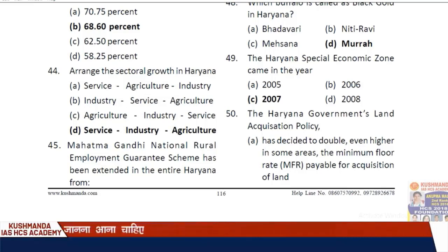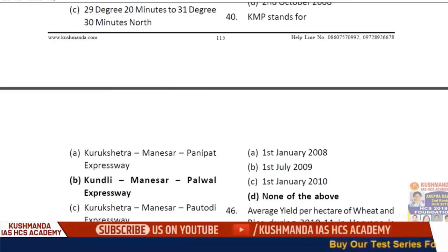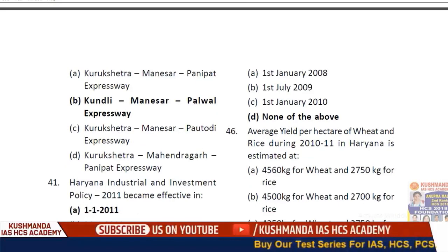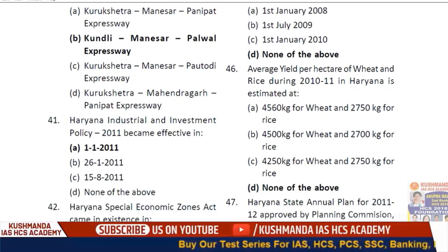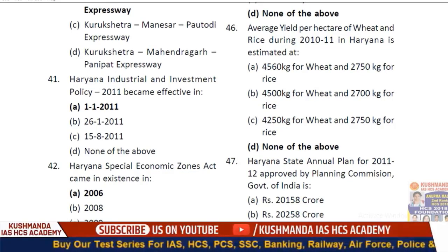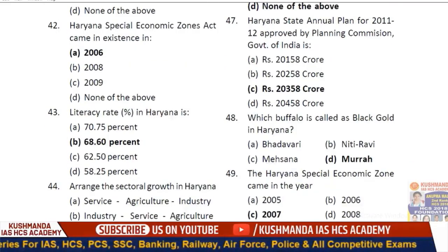Question 45 on Mahatma Gandhi Rozgar Yojana — it has been extended in the entire state. The answer is option D. Question 46: Average yield per hectare of wheat and rice during 2010–11 in Haryana — the answer is none of the above.